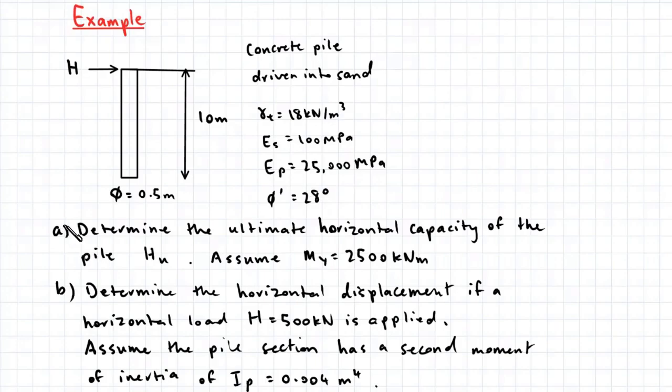Part A of this example wants us to determine the ultimate horizontal capacity of the pile HU, assuming a yield moment of 2500 kNm. Part B wants us to determine the horizontal displacement if a horizontal load of 500 kN is applied. We can also assume that the pile section has a second moment of inertia IP of 0.004 meters to the power of 4.